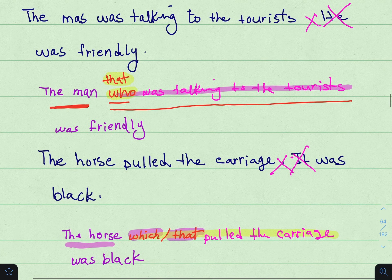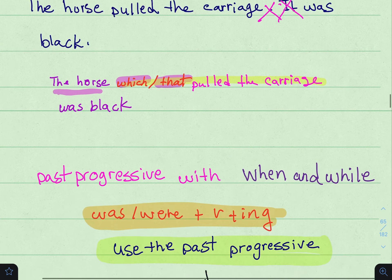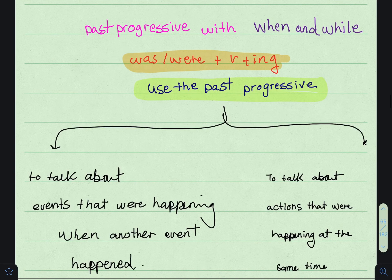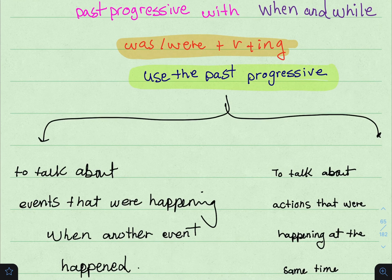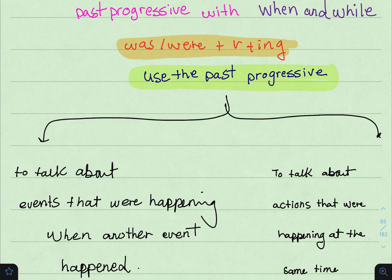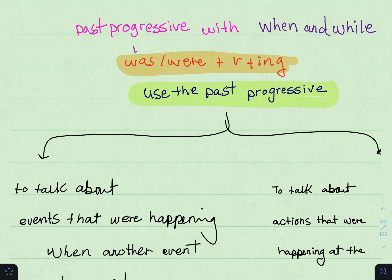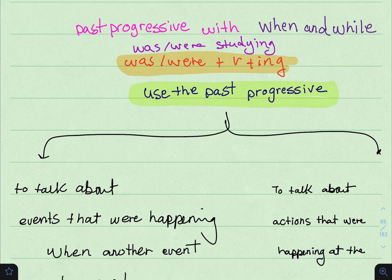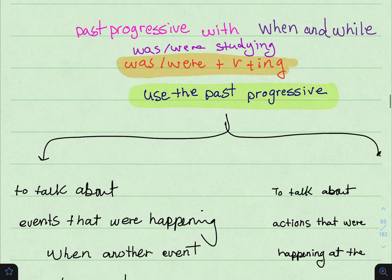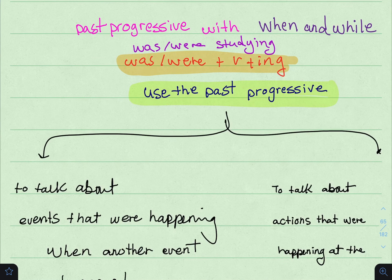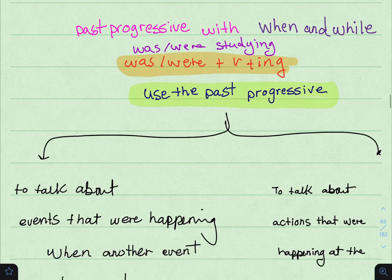So that covers relative pronouns and when to use them. Now let's look at the second objective: past progressive with when and while. The past progressive, which is the continuous past, is formed with 'was' or 'were' plus verb plus -ing — for example: was/were eating, was/were speaking, was/were studying. Remember: 'was' is used with singular subjects and 'were' with plural. Also be careful to add -ing correctly to the verb.